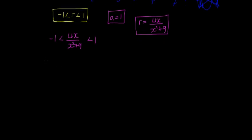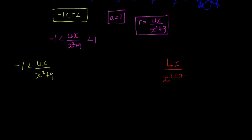I'll split this into two parts. In yellow on the left: -1 < 4x/(x²+9). In red on the right: 4x/(x²+9) < 1. I'll prove the left inequality first, then the right.